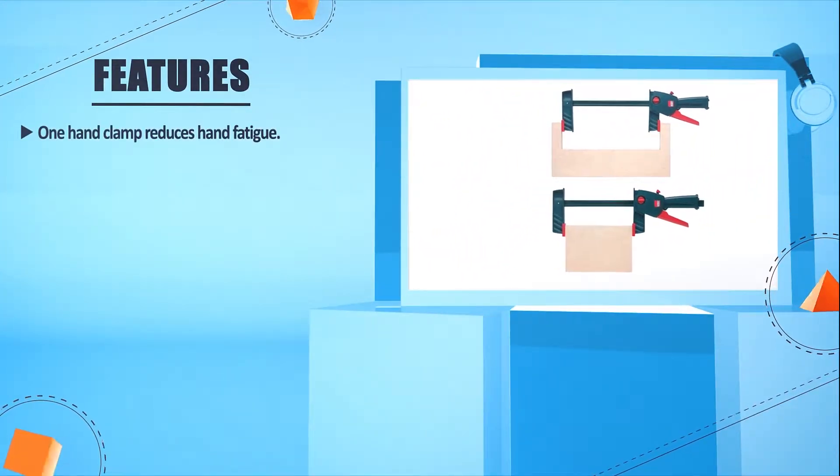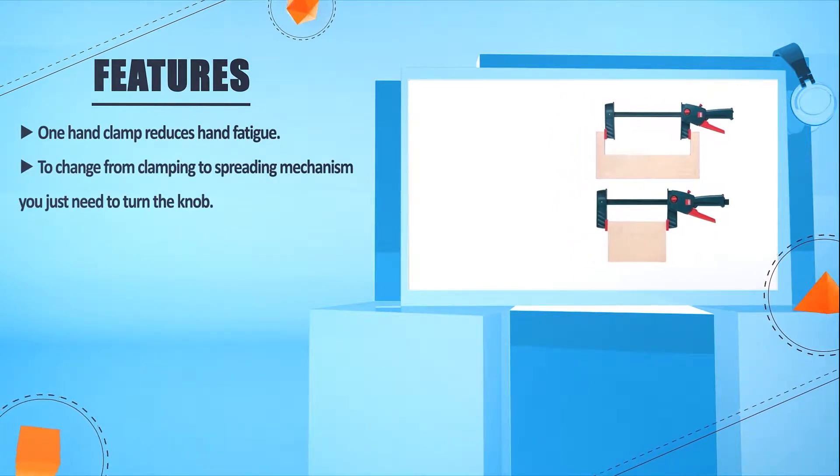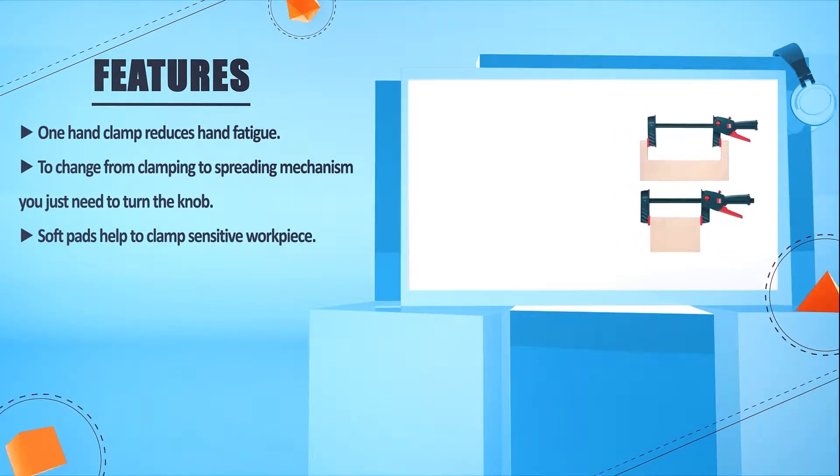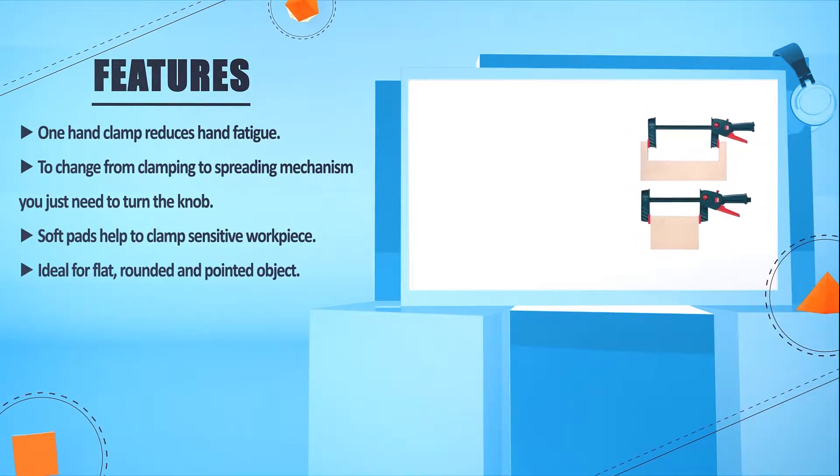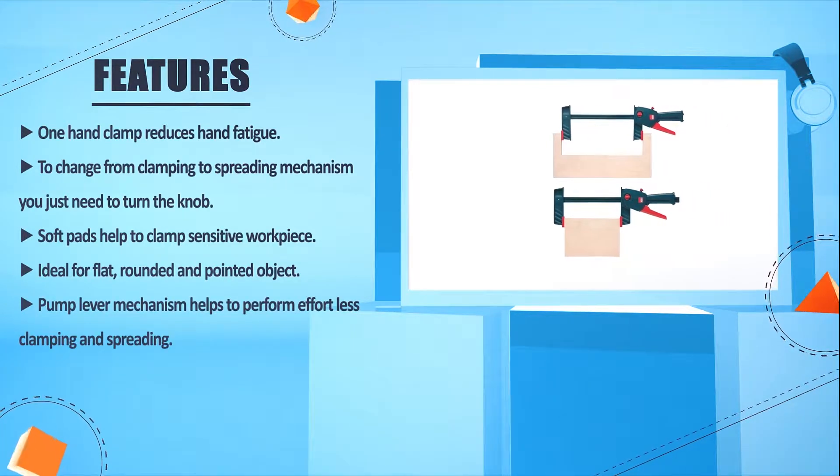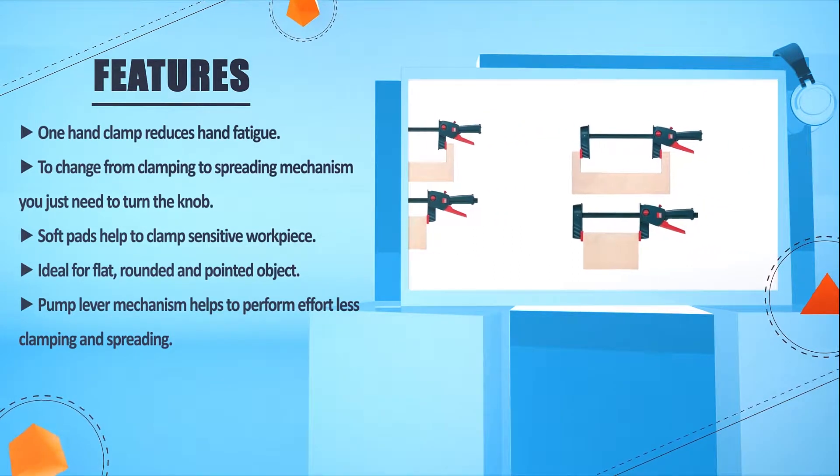One hand clamp reduces hand fatigue. To change from clamping to spreading mechanism you just need to turn the knob. Soft pads help to clamp sensitive workpiece. Ideal for flat, rounded, and pointed objects. Pump lever mechanism helps to perform effortless clamping and spreading.